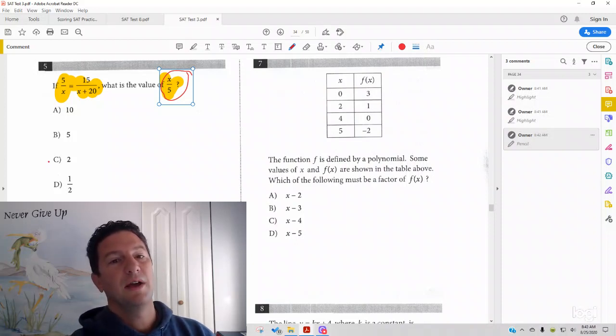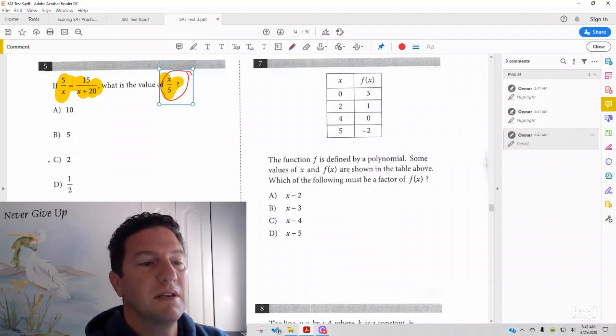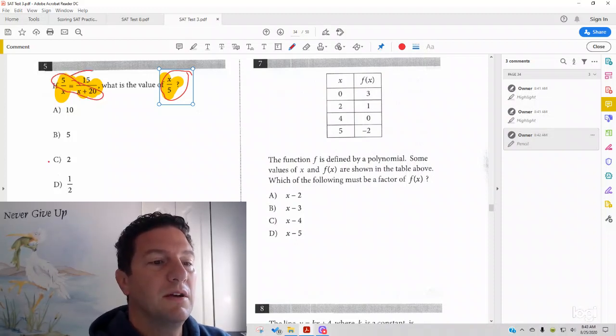Now, let's see how we'd actually do this. How you'd do this is you'd cross-multiply and set equal. So, if we cross-multiply here, set equal, what we wind up getting is 15x equals 5 times the quantity x plus 20. And then you distribute that 5.